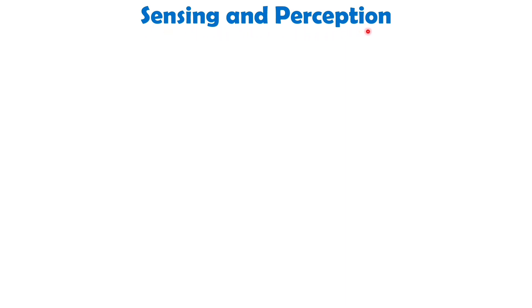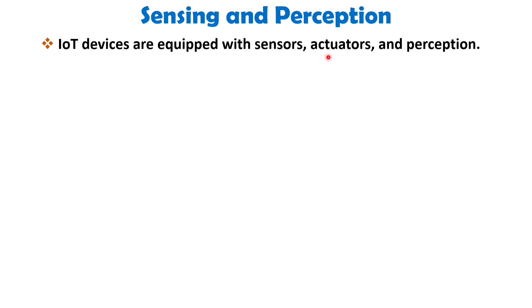The next IoT characteristic is Sensing and Perception. IoT devices are equipped with sensors, actuators and perception capabilities to gather data from their environment and interact with physical objects. Sensors are devices that can detect changes in the environment such as temperature, light, sound or movement. In IoT systems, sensors are embedded into devices allowing them to collect data about the environment.